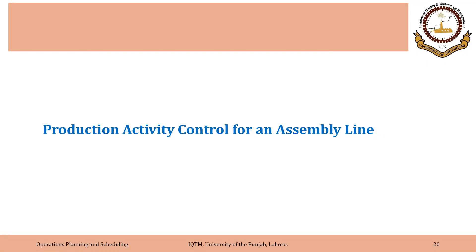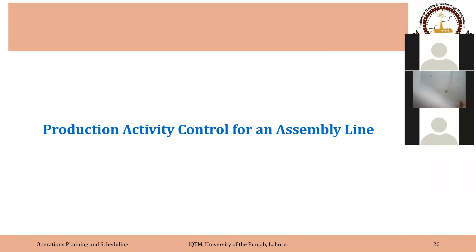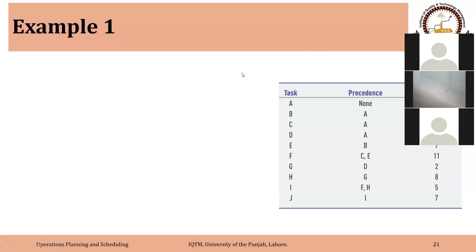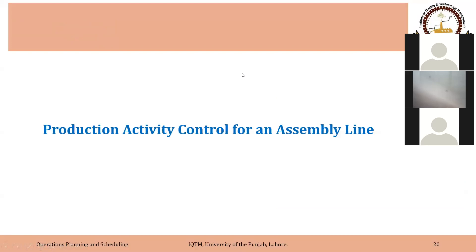We will discuss some of the very basic concepts related to production activity control for an assembly line. This is a big topic and primarily I will be focusing on how we can meet the rate of customer demand, how we can combine the operations if possible, or how we can add resources to the assembly line to meet the rate of customer demand. That is the aspect of production activity control I will be primarily focusing on, but there are a number of other concepts related to assembly line that we might discuss informally depending upon the questions that you have.